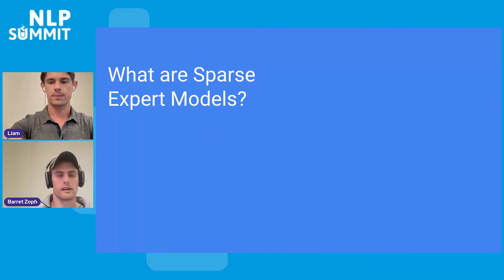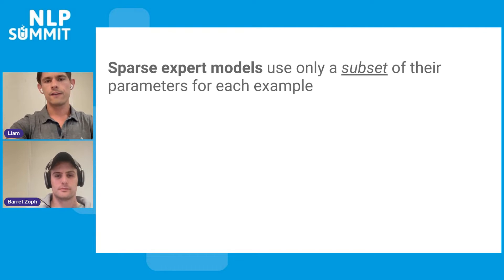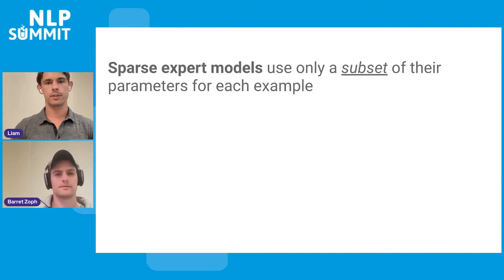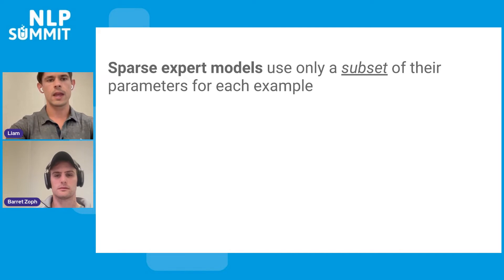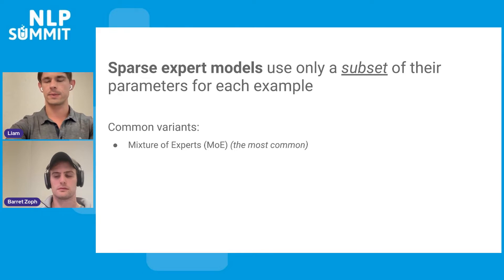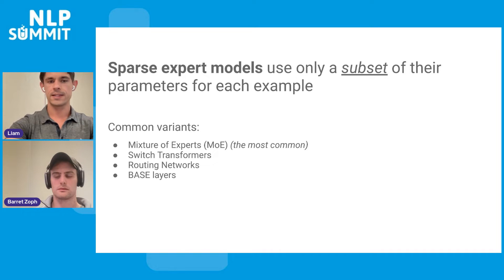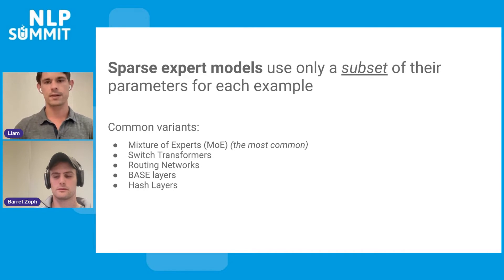What are sparse expert models? A sparse expert model is a neural network that uses only a subset of the parameters for each example. Typically, a neural net uses every parameter for every example. Instead, a sparse expert model chooses which parameters to use for each example. This includes many common variants — the most familiar being mixture of experts, a 30-year-old concept — as well as more recent work: switch transformers, routing networks, base layers, and hash layers. All of these share the commonality that you're only using a subset of the parameters, making them compute efficient.